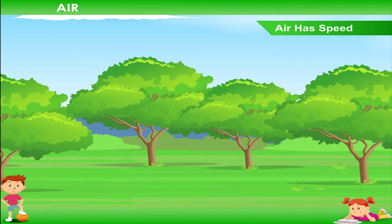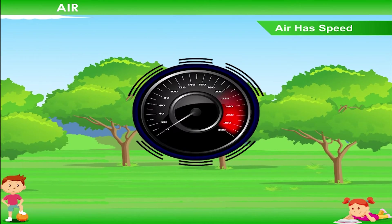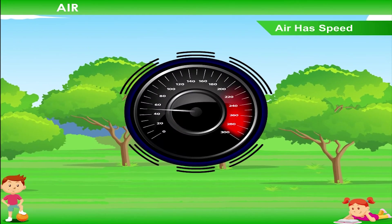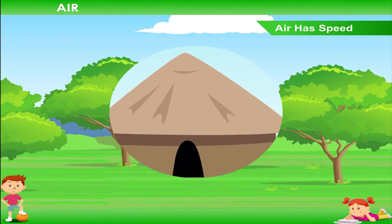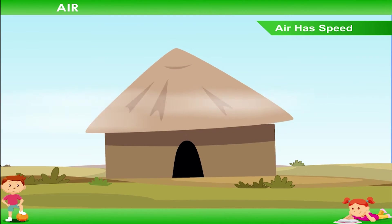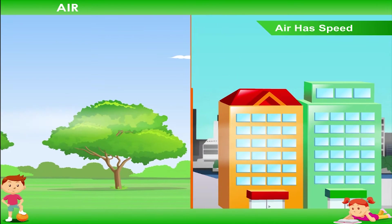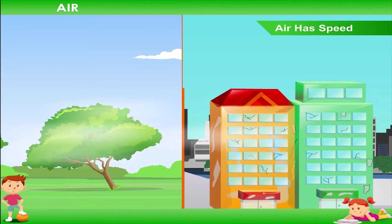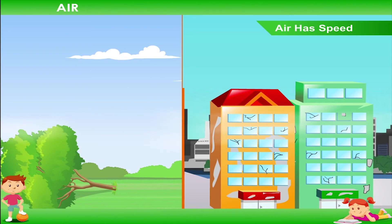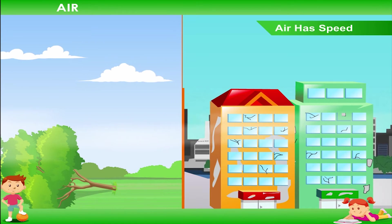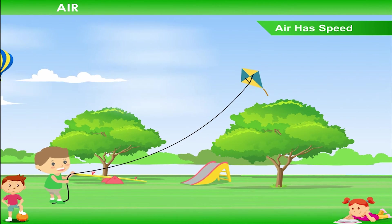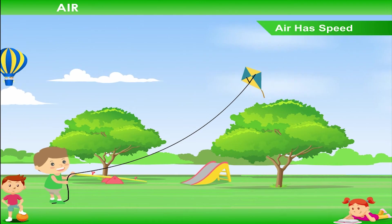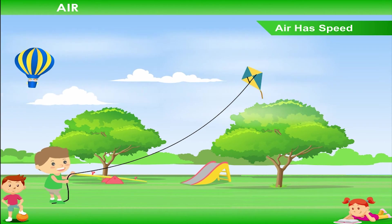Air also has speed. If it moves at a high speed, it can cause destruction of houses, trees, buildings, etc. Air moving at a high speed also changes the direction of objects flying in the air such as kites, hot air balloons, and clouds.